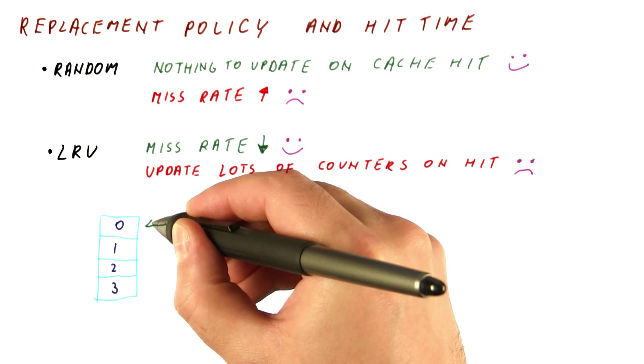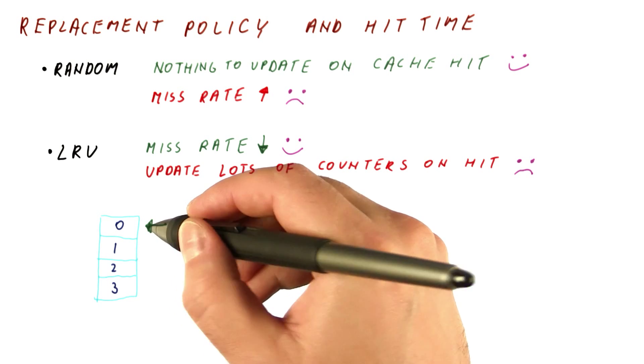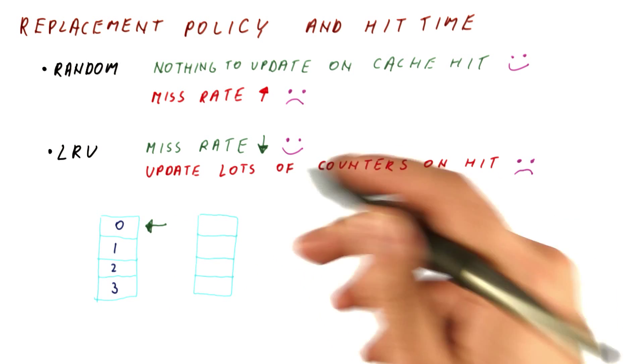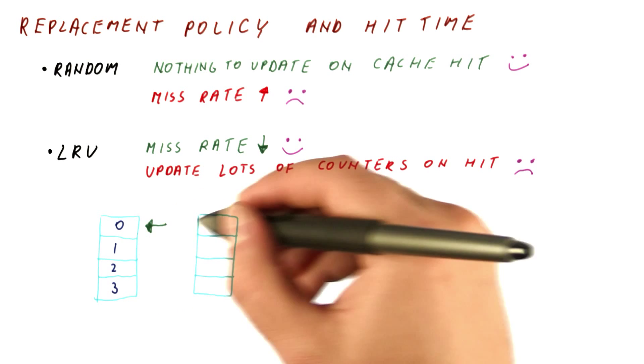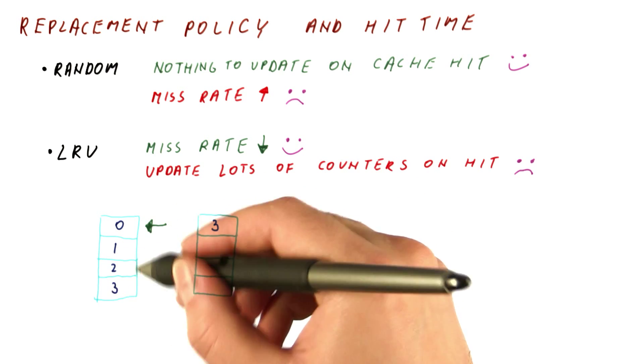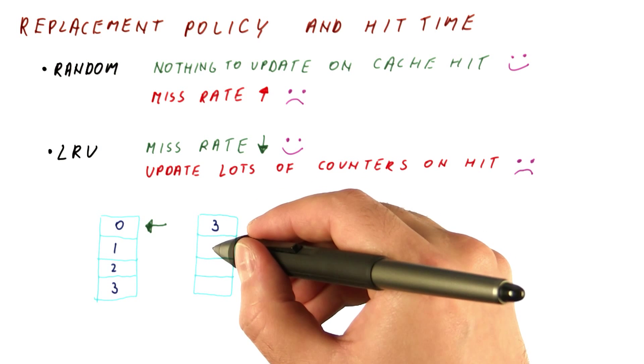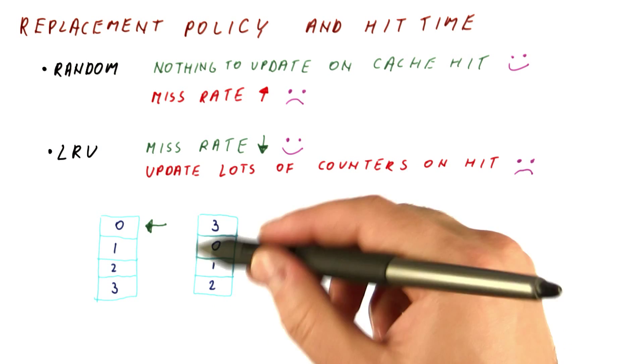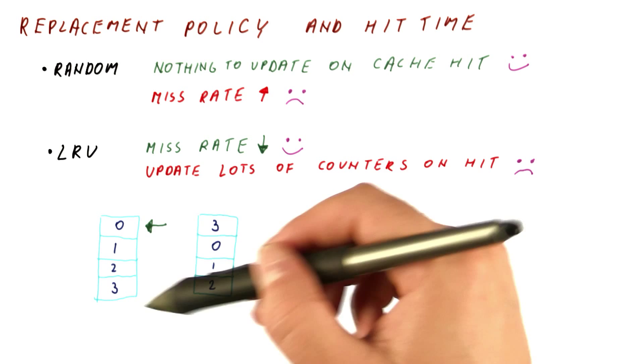If the processor accesses this line here and has a hit, the new values of the counters are going to be this one becomes the most recently used, and all of the other counters get decremented. As you can see, all of the counters have changed, and this happens on a cache hit.